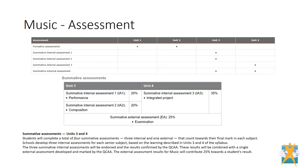Students will complete a total of four summative assessments — three internal and one external — that count towards their final mark in music. These results will be combined with a single external assessment developed and marked by the QCAA. The external assessment results for music will contribute 25% towards the student's results.